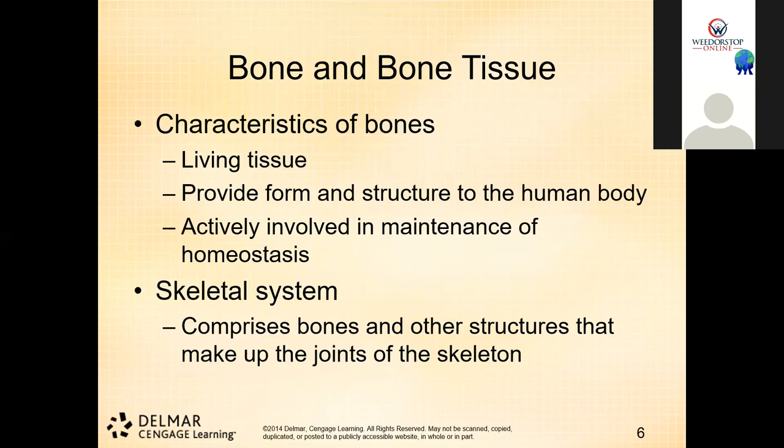Bones are living tissue. The end of the bone is the epiphysis, and the shaft or diameter of the bone is the diaphysis. At the epiphysis level, you normally find spongy bone, where red blood cells are formed and where you find bone marrow. We'll review this briefly and continue.